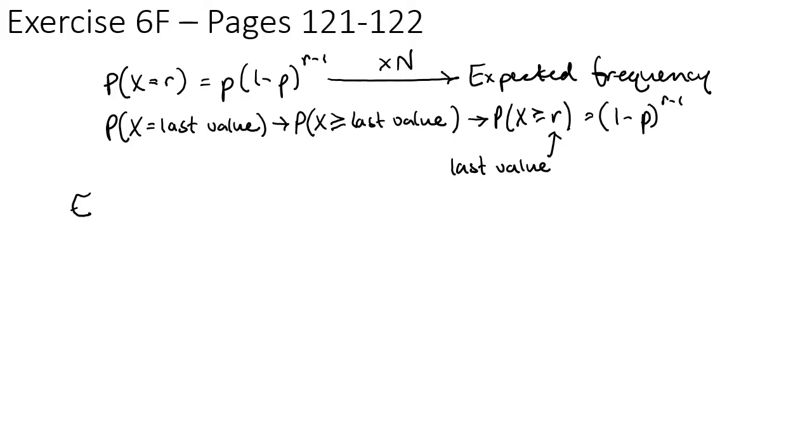If we need to estimate P, so if P is not given, so we need to estimate the probability, it's like the mean formula upside down. So the number of observations divided by the sum of each outcome times its frequency.